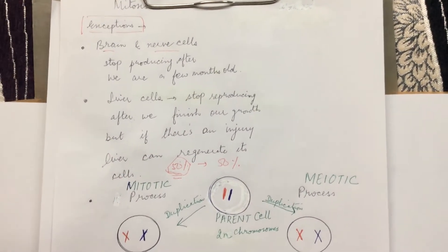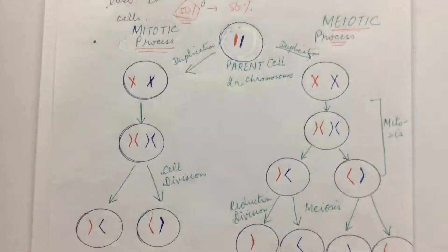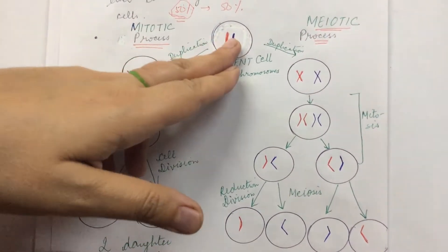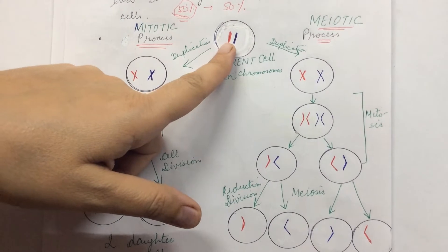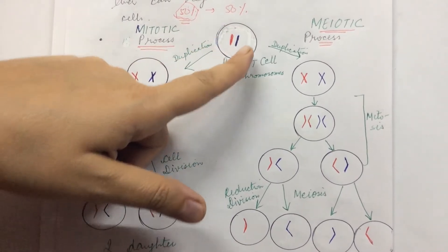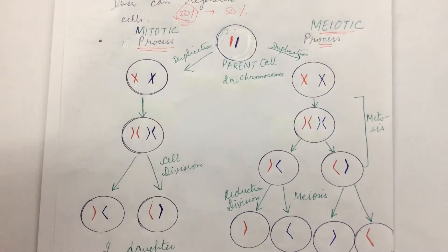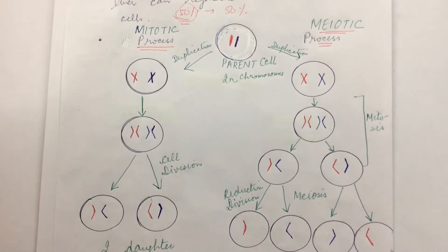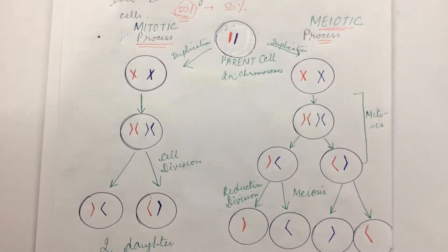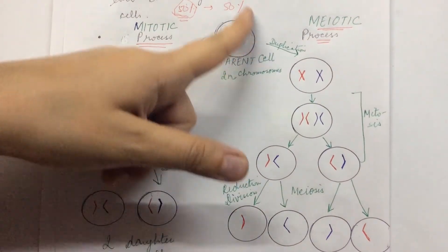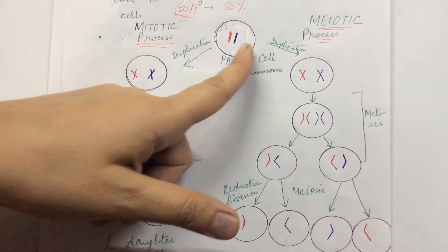Now I will briefly explain the mitotic and meiotic processes. In mitotic division, suppose the parent cell has two chromosomes. We can say this is the diploid parent cell because we have a complete set of chromosomes inherited from both parents — 46 chromosomes, meaning every cell has 23 pairs of chromosomes. This is the parent cell with its diploid set of chromosomes.